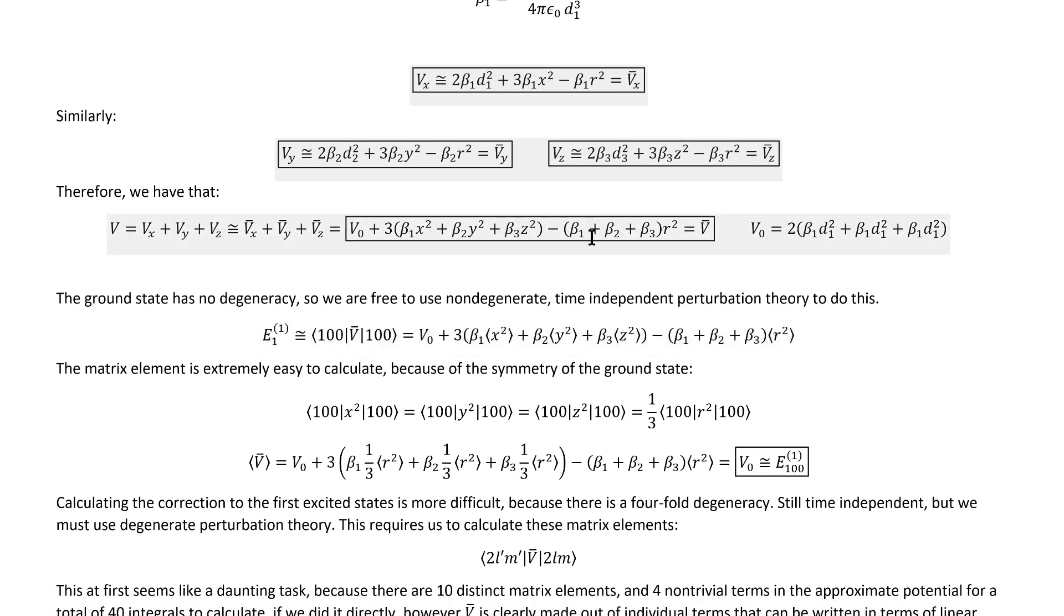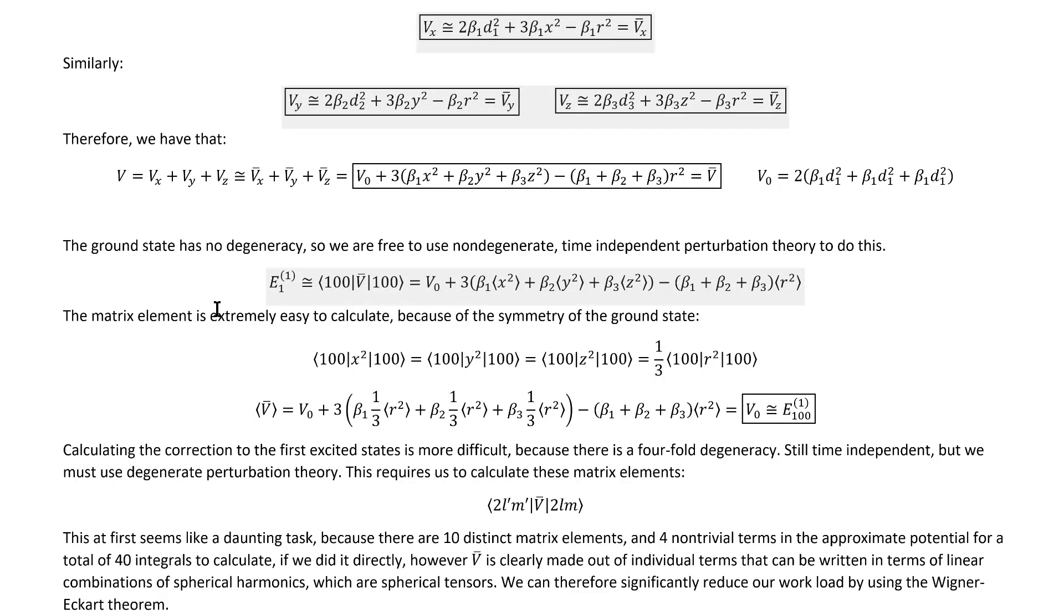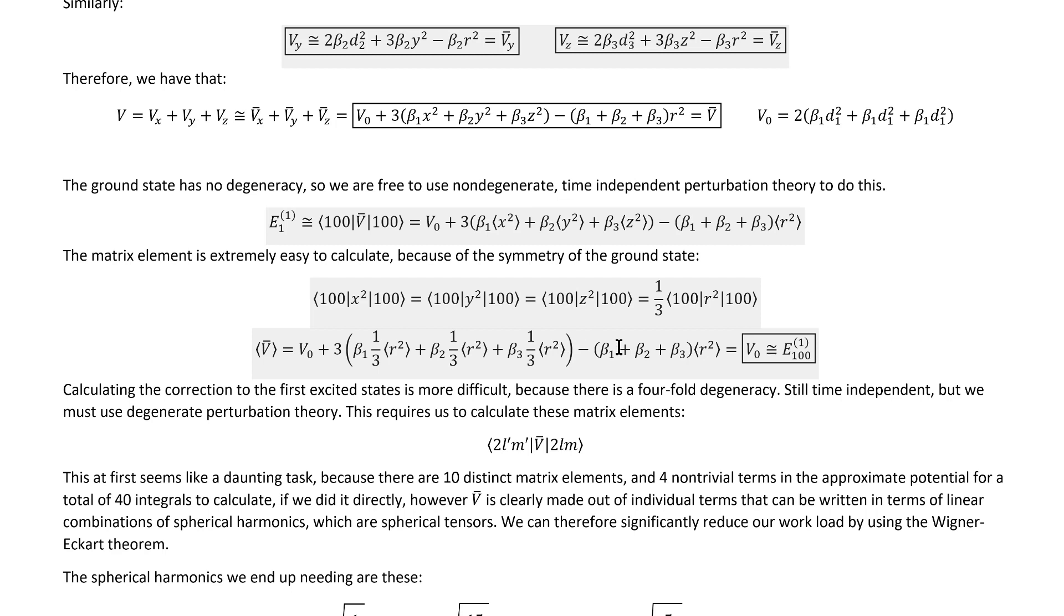Actually inserting the approximate perturbed potential that we calculated immediately gets us this expression, which might seem like a lot of integrals to do, but of course the ground state is spherically symmetric, which immediately means that these must be true. And that simplifies it down at least to just one integral, but in fact it's actually even easier than that. When we substitute that in, we see that all the parts of this quantity here that we might possibly have to do an integral for actually just cancels out, and we're left with our answer as just V-naught. And that's the first part of it. We know what the first-order ground state energy correction is according to the quadratic approximated perturbing potential.